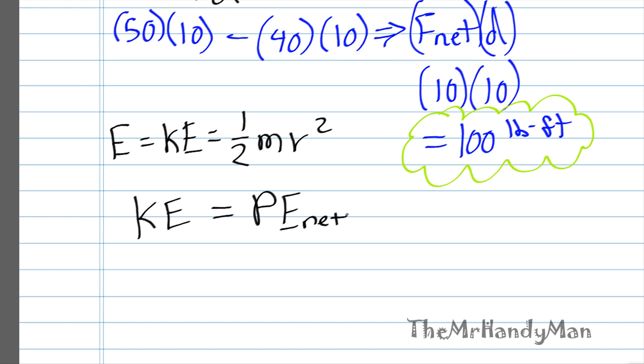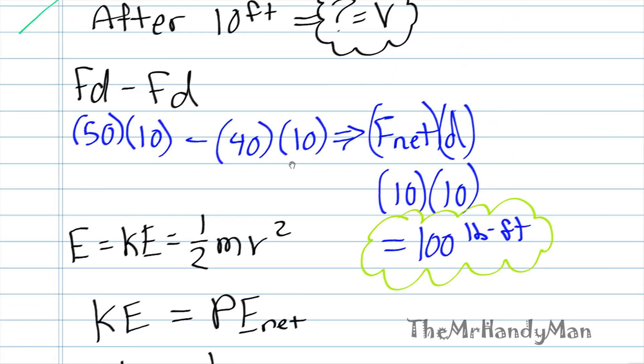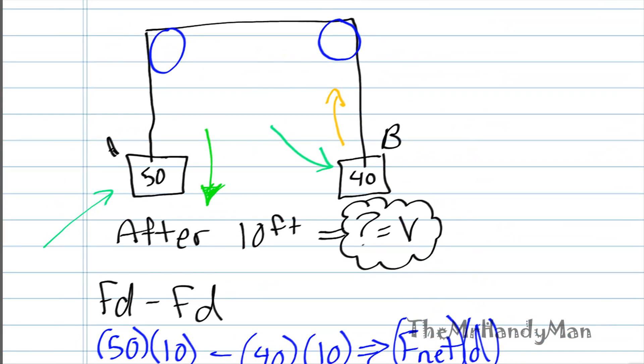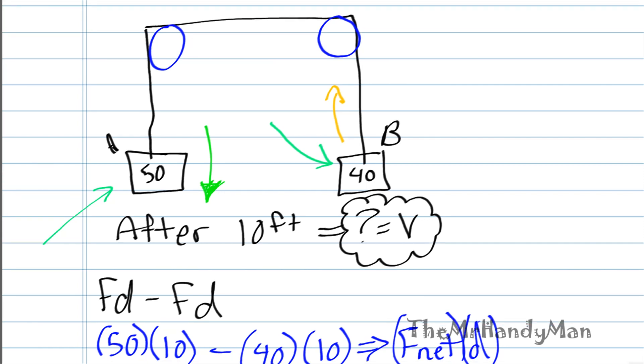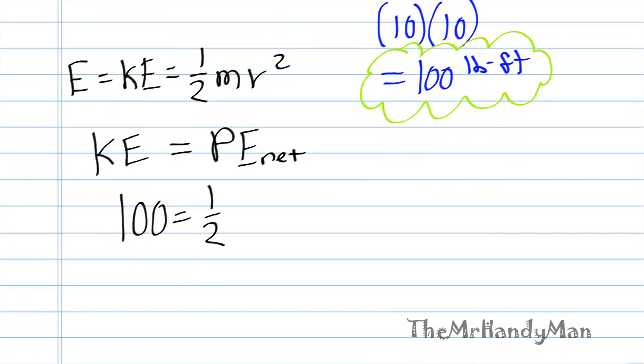Thus, you can just say 100 will equal, 100 will equal one-half M. Now, M is going to be the combination of both the masses that are tied to the motion of these boxes, which is going to be both 40 and 50. So,